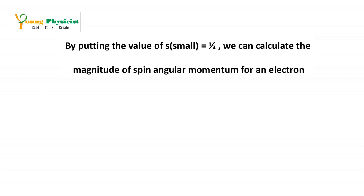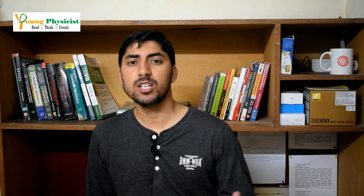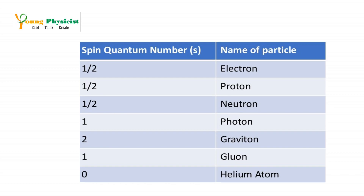By knowing the value of the spin quantum number for an electron, we can calculate the magnitude of spin angular momentum, which comes out to be the square root of three divided by two, times h-bar, where h-bar is the reduced Planck's constant and serves as the unit of spin angular momentum. Spin is the short name for spin angular momentum, and the spin quantum number is obtained when you remove the unit from spin angular momentum. All elementary particles are assigned a spin quantum number — for the electron it is one-half, for the proton it is one-half, and for the neutron it is also one-half.